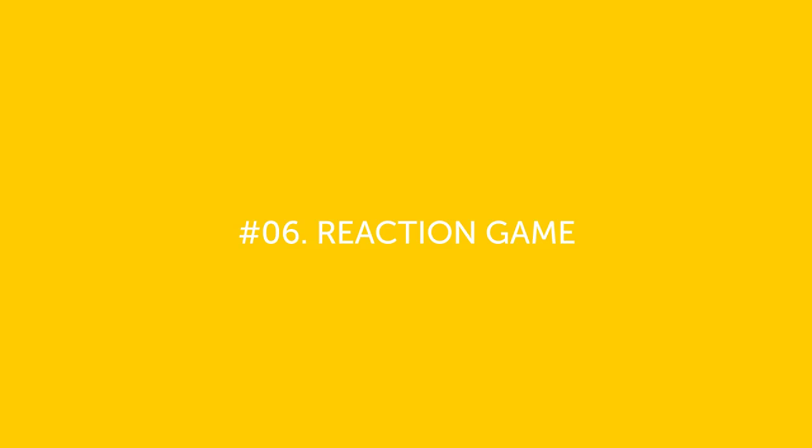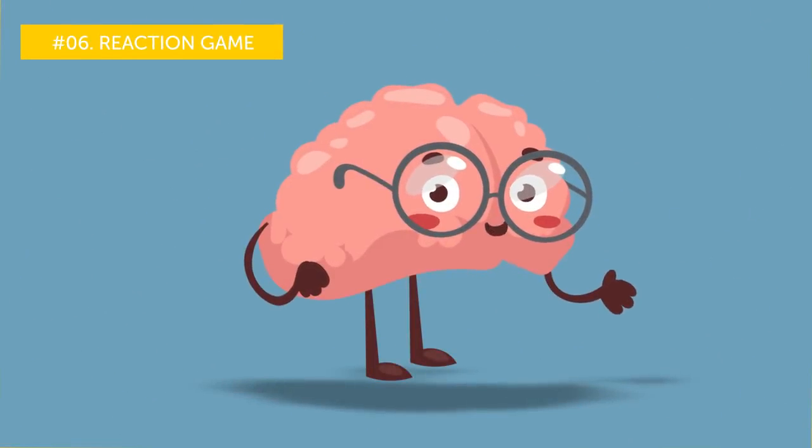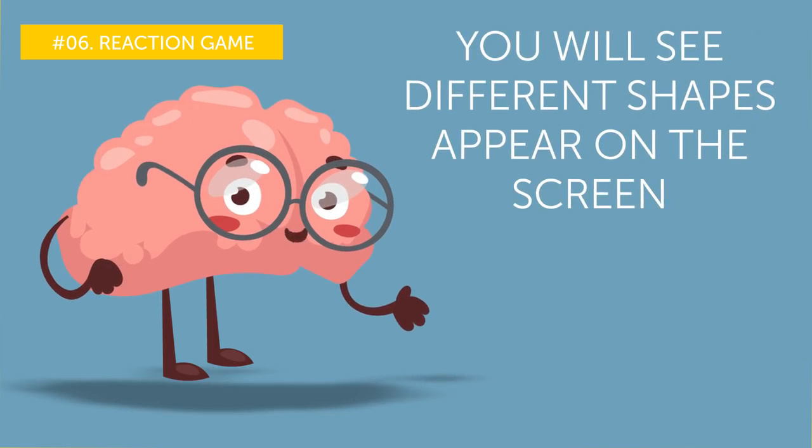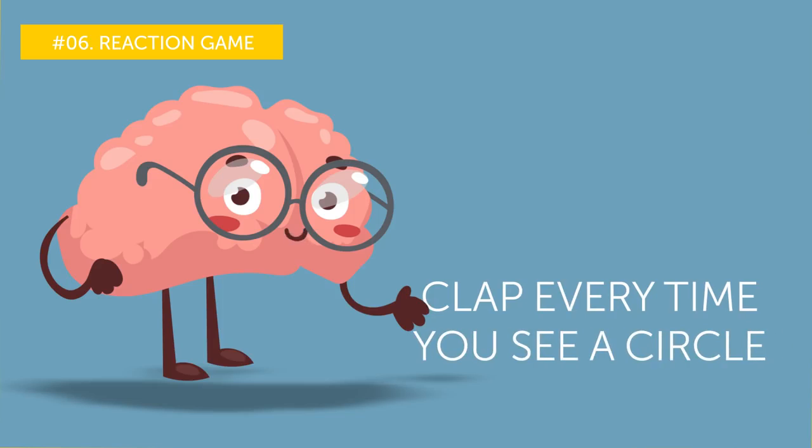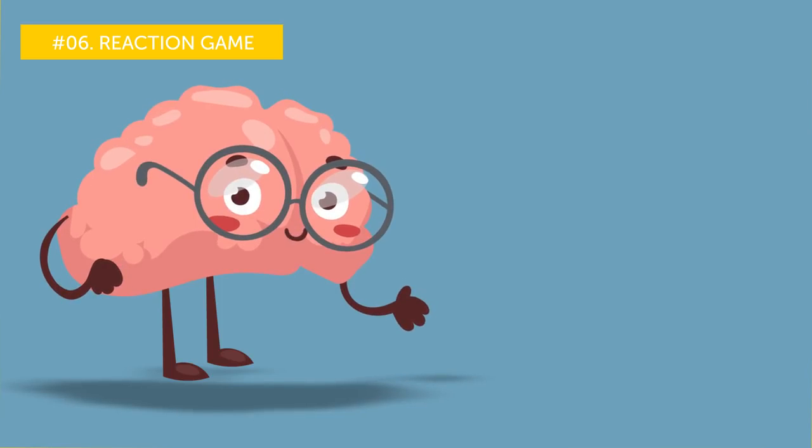Number 6, Reaction game. Now that you've trained your memory, it's time for a reaction exercise. You will see different shapes appear on the screen. Your task is to clap every time you see a circle. We'll start with a slow easy sequence and then go faster and faster. Ready? Let's go.